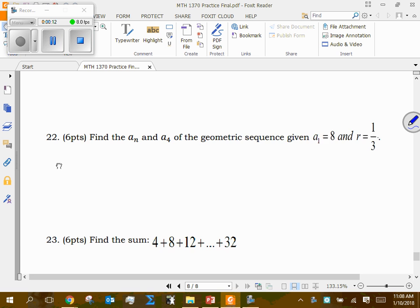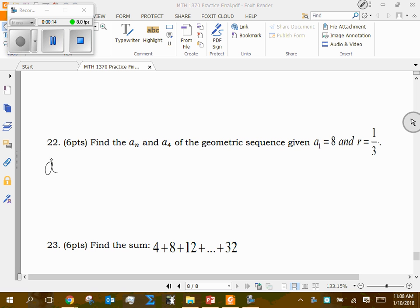So our general formula is that a sub n is equal to a sub 1 times r raised to n minus 1, where a sub 1 is your first term, so that's 8. 8, r is your ratio, so in this case 1/3, and then n minus 1 is n minus 1. Okay, so that's the generic format.